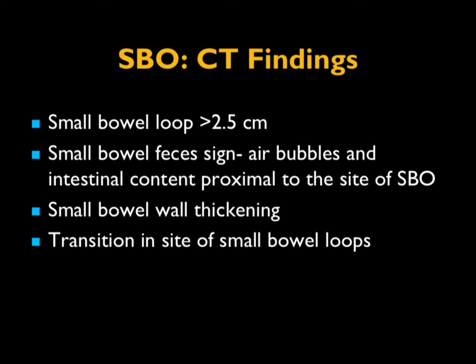When looking at bowel loops, small bowel loops over 2.5 centimeters are considered dilated. We talk about the feces sign — air bubbles and intestinal content proximal to the site of small bowel obstruction — one of my favorite signs when you see it. Small bowel wall thickening is over 3 to 4 millimeters. We talk about transition sites. When you see dilated bowel, look at where it changes — at the transition point, is there a mass like a carcinoma? Is it into a hernia? Into adhesions? CT is very good at answering that.